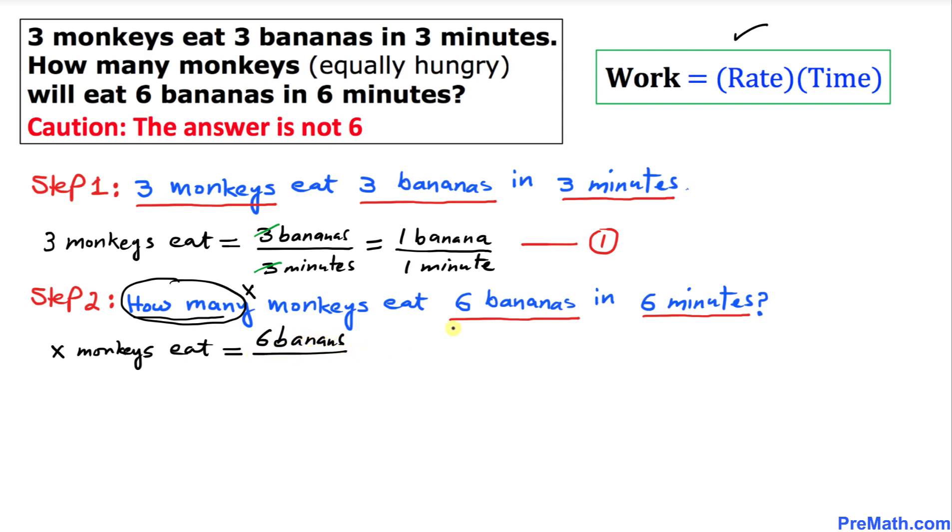So I can write X monkeys eat equal to, this time we have six bananas divided by six minutes. And now as we can see, this six and six is going to give us one, so I can write one banana.